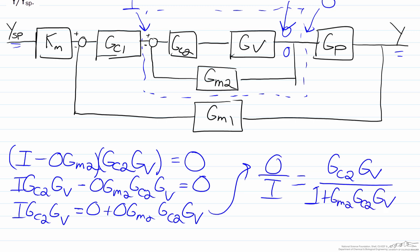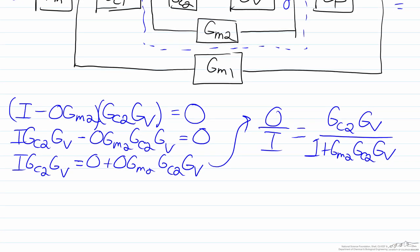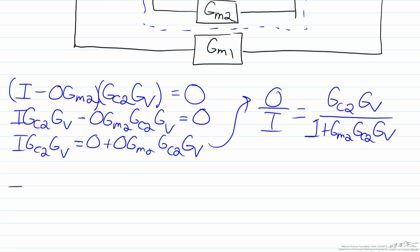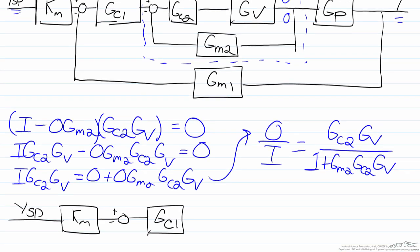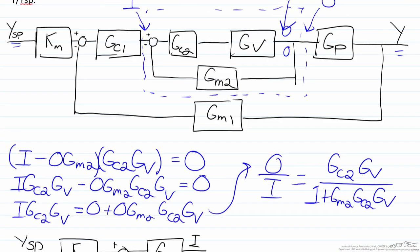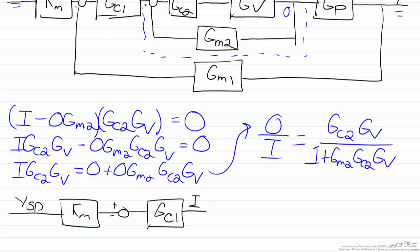So what we will now do is redraw the block diagram to show where we have moved to. So now again we will have the ysp that will connect to Km, and we will still have our summing point, which will go to the first controller. Recall that our input came after Gc1, so this will be I. Then we will have a block here, and what will come out is O.